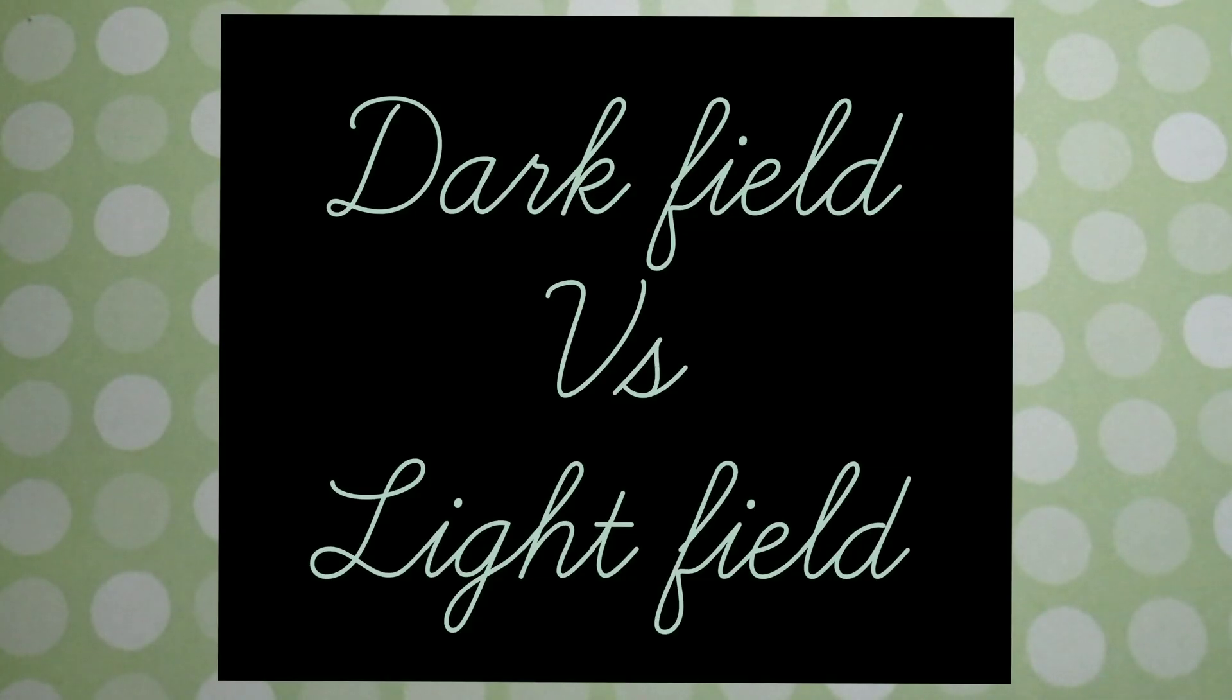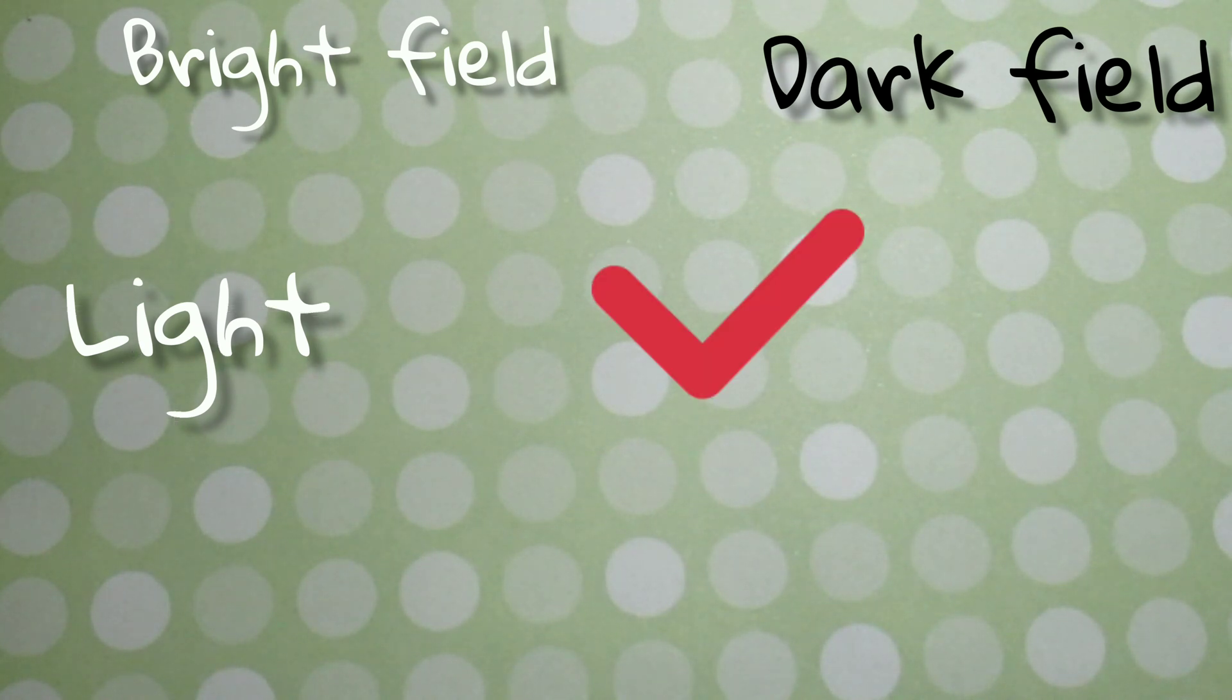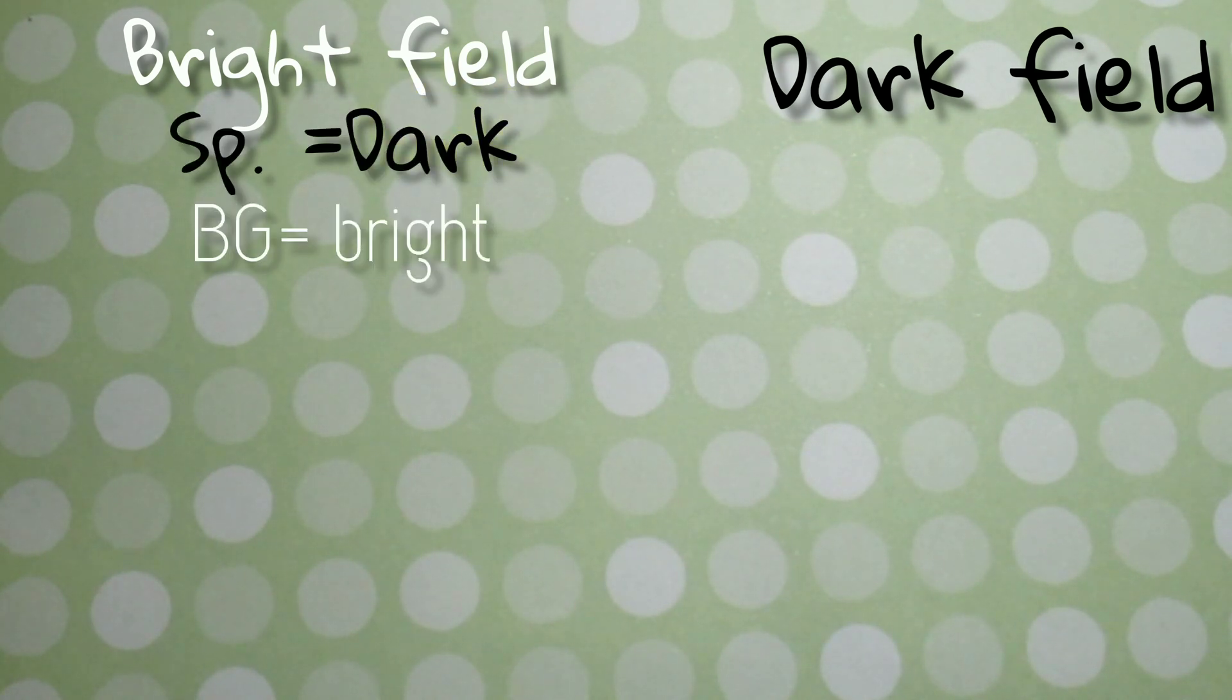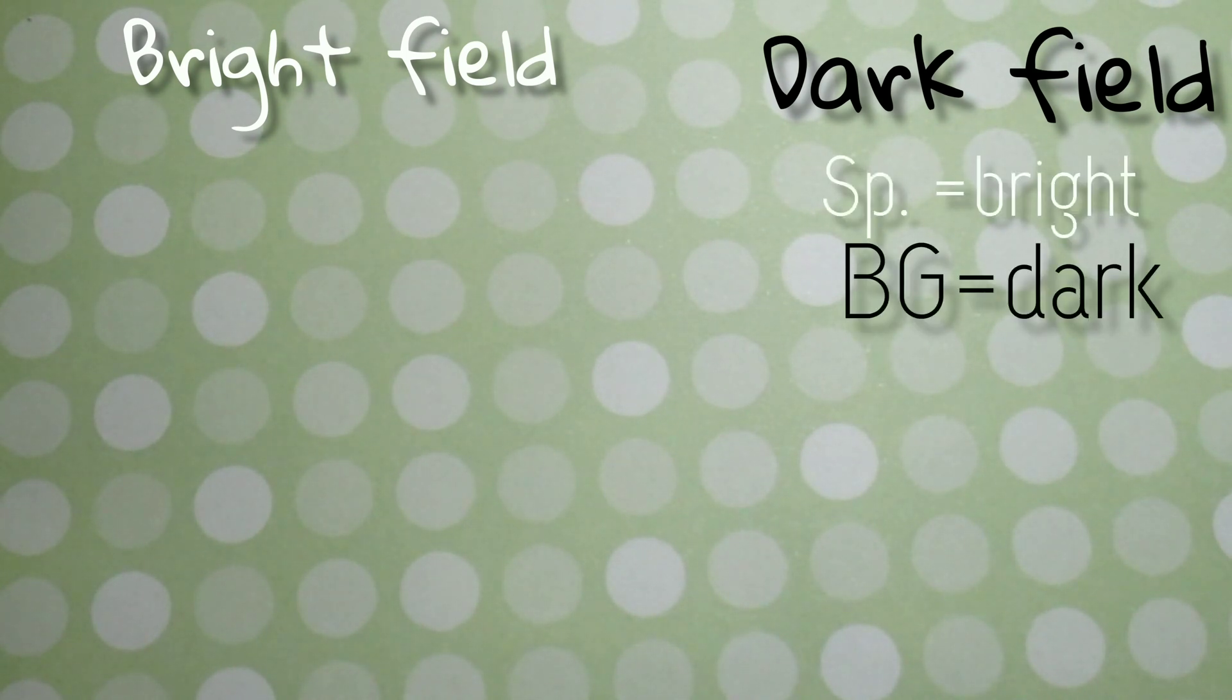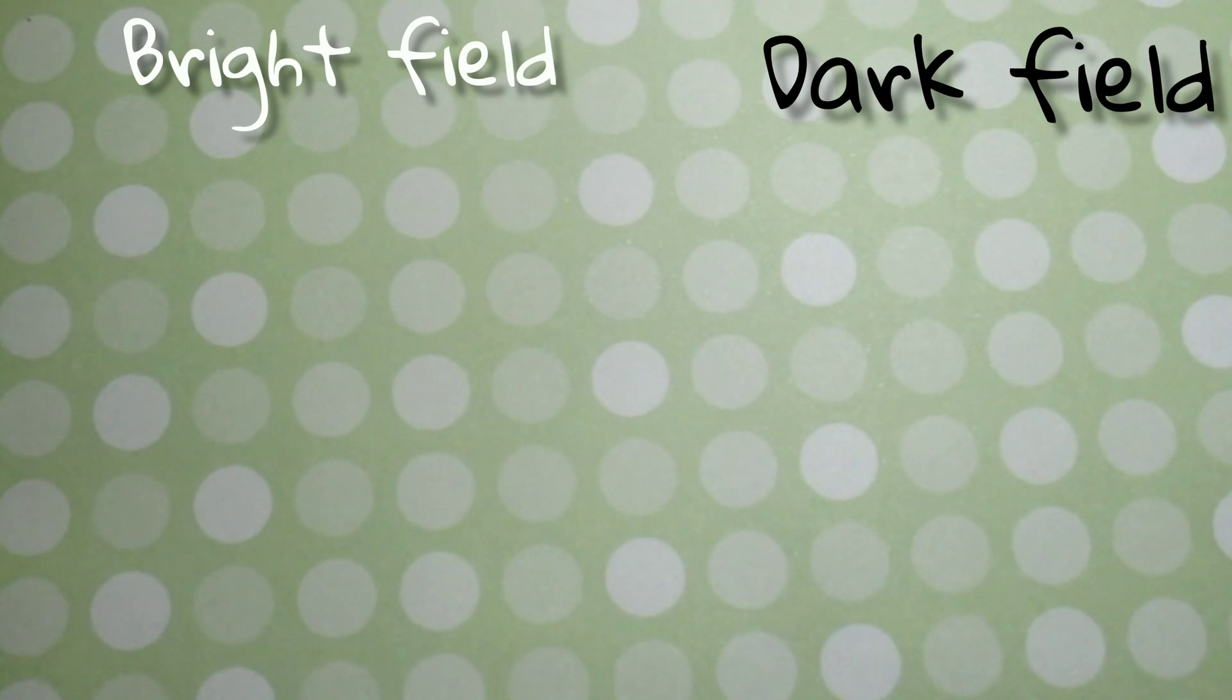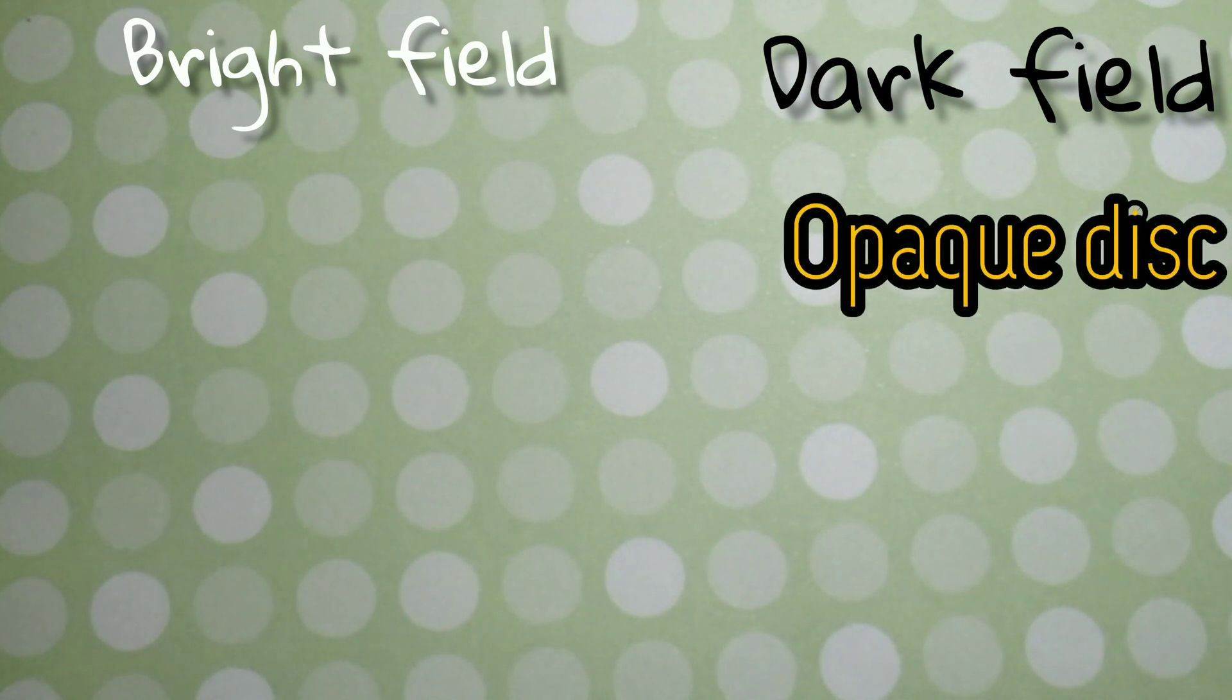After illustrating about bright field microscopy and dark field microscopy, we can draw a quick comparison between both of them. In both ways, you observe light interacted with the sample. The differences can be drawn as: in case of bright field, the specimen is dark and the background is bright, but in case of dark field, the specimen is bright and the background is dark. The next difference is specimen details are observed. Since little light actually falls on the specimen, it shows less details. It is the most basic type of microscopy and requires an opaque disk blocking the light waves.